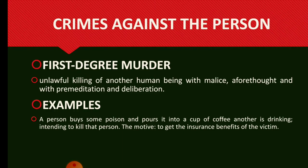Crime Against The Person: First Degree Murder. Unlawful killing of another human being with malice aforethought and with premeditation and deliberation. Example: A person buys some poison and pours it into a cup of coffee another is drinking, intending to kill that person. The motive: to get the insurance benefits of the victim.